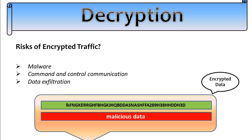There are some risks of encrypted traffic, as threats like malware, command and control communication, and data exfiltration can hide within an encrypted packet. That is where Palo Alto or other firewalls like Check Point and Fortinet can inspect and decrypt the traffic to identify and neutralize potential threats.